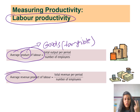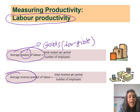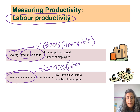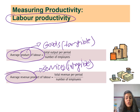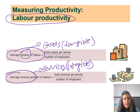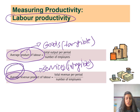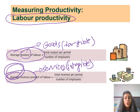The second way to measure labor productivity is through revenue, called the average revenue product of labor, used for services or intangible output — for example, a hairdresser or salon. The formula is total revenue per period divided by the number of employees. The average revenue product of labor is a better method since labor productivity is not very accurate when it comes to services.